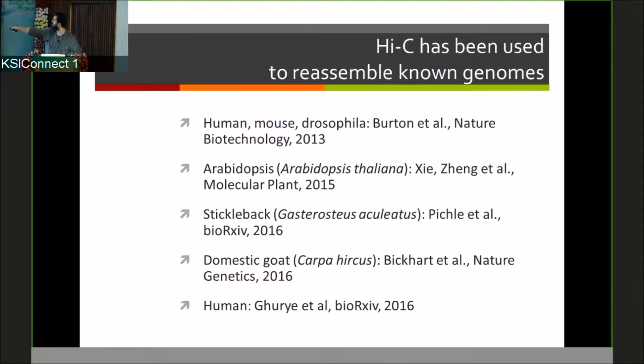They said let's take a genome where we know how it is assembled, where we know the correct answer, we will cut it into little pieces, and we will show that we can put those pieces back in the right order. This exercise has been done actually a whole bunch of times. It was done in human, mouse and drosophila in 2013, arabidopsis 2015, stickleback in 2016, goat in 2016. I want to highlight, though, that in all of these cases, the answer was known.